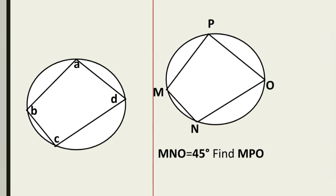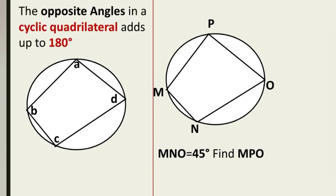Rule number 4 states that the opposite angles in a cyclic quadrilateral add up to 180 degrees. A cyclic quadrilateral is basically a four-sided polygon inscribed in a circle, or whose vertices lie on the circle. Looking at the diagram, angle A is opposite to angle C, so A plus C must equal 180 degrees.